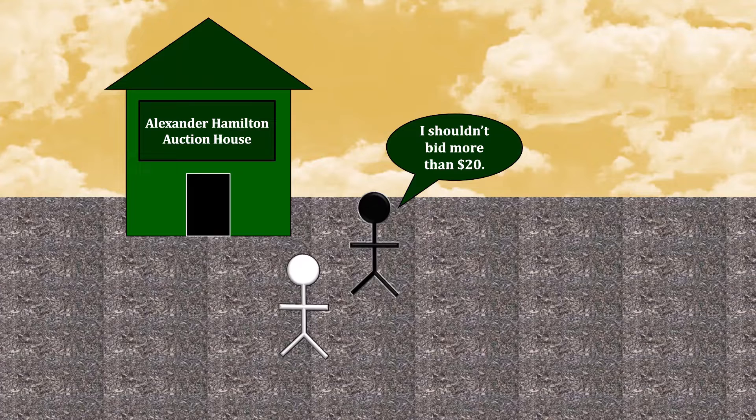No good can come from bidding $30. In fact, if the stranger were to somehow have the highest bid, he would end up with a negative payoff overall. Going to $40 or $50 or even more can only bring about a worse disaster, with no actual benefits.